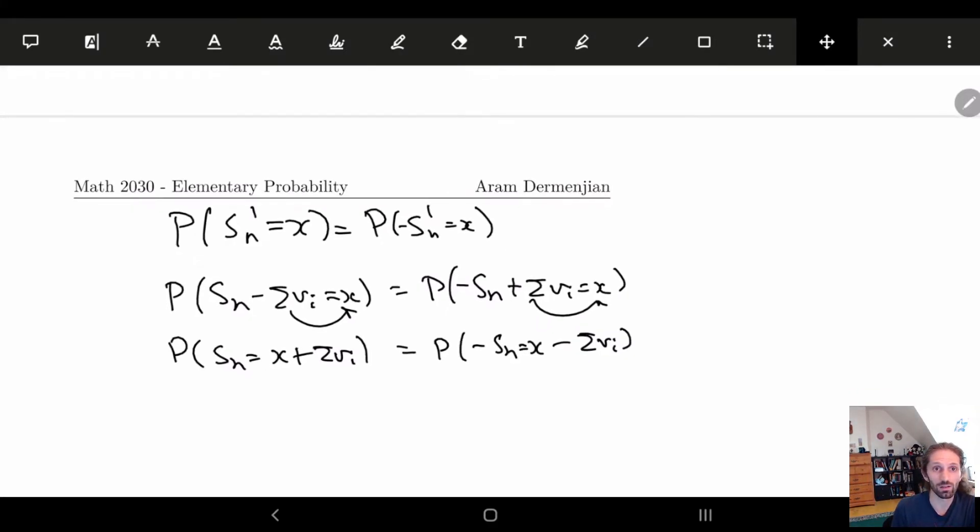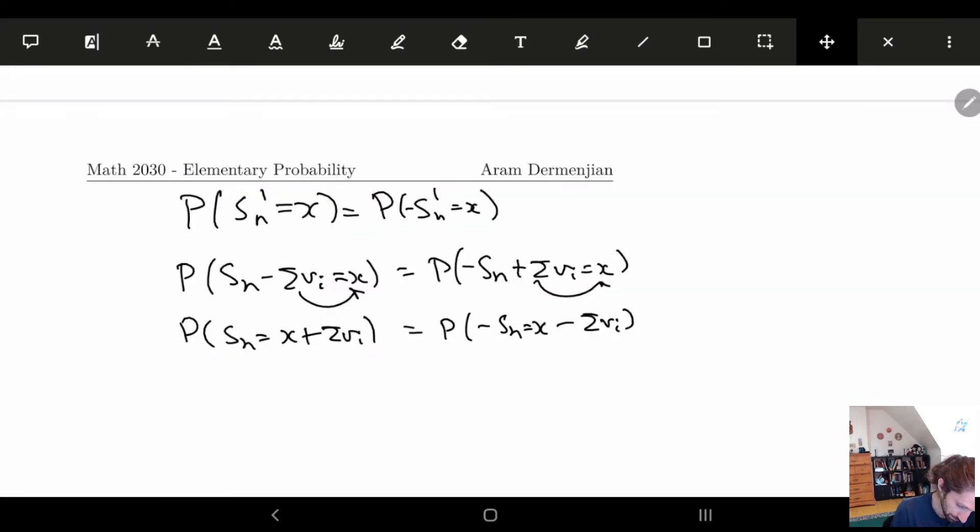So what happens if I get rid of this minus sign? So if I get rid of this minus sign, I get p of sn is equal to minus x minus vi. I guess it's kind of better to do minus minus. So here, I'll just keep the minus here and plus.